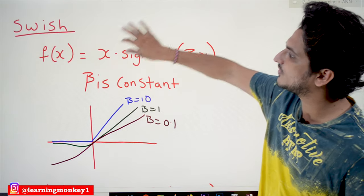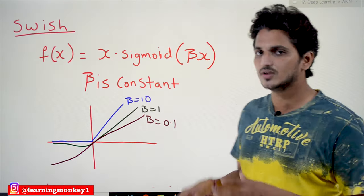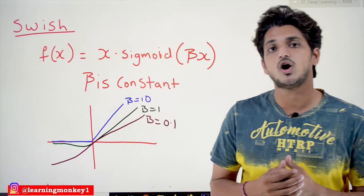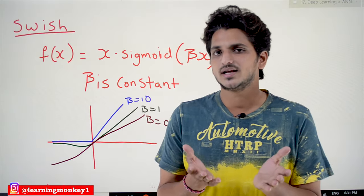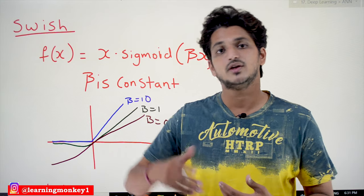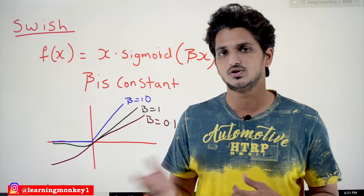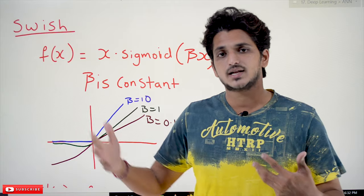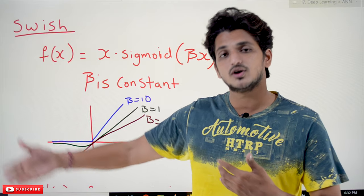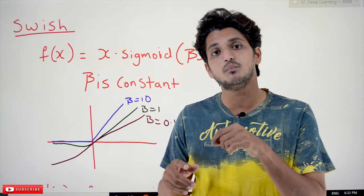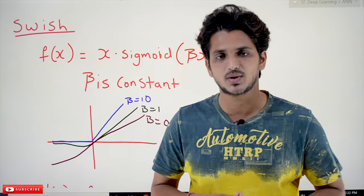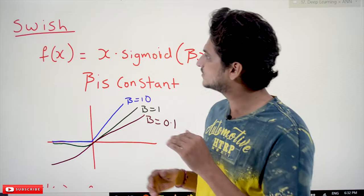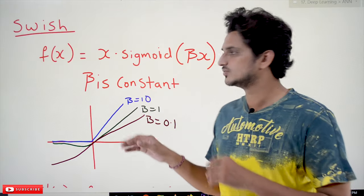The next activation function is the Swish activation function. Recently, they introduced this Swish activation function. Google has used this Swish activation function on the ImageNet dataset. What is the ImageNet dataset? All those discussions will be covered when we discuss convolutional neural networks. In the research paper, they have shown that on large datasets, when using a large number of layers in a neural network, the Swish function works better compared to the ReLU function. They demonstrated this on the ImageNet dataset. How does this Swish function work? All these things will be discussed here.